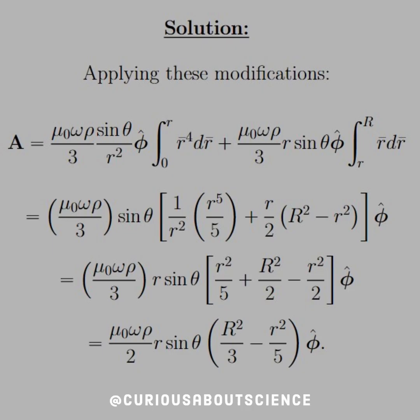So applying these modifications, A is equal to mu naught omega rho over three times sine theta over r squared phi hat. And now we have to integrate in order to find actual density. So that would be r bar to the fourth dr from zero to r.